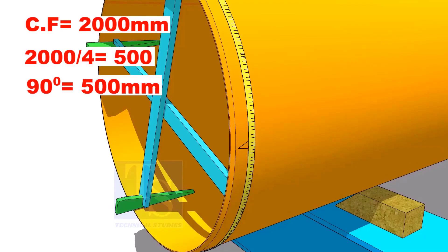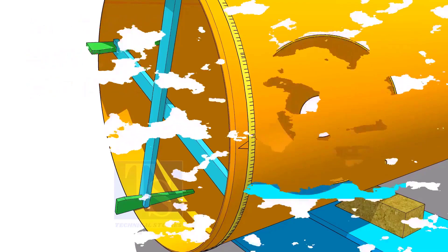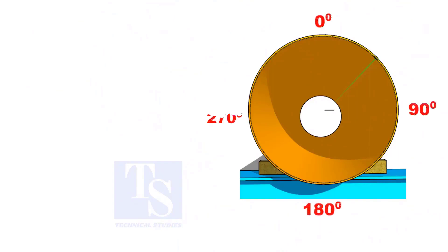Now you have the arc length of 90 degrees. Mark the 500 mm each, starting from the center line, as 0, 90, 180, and 270.